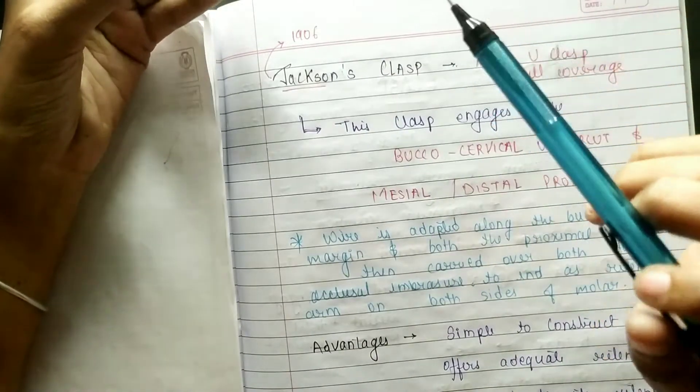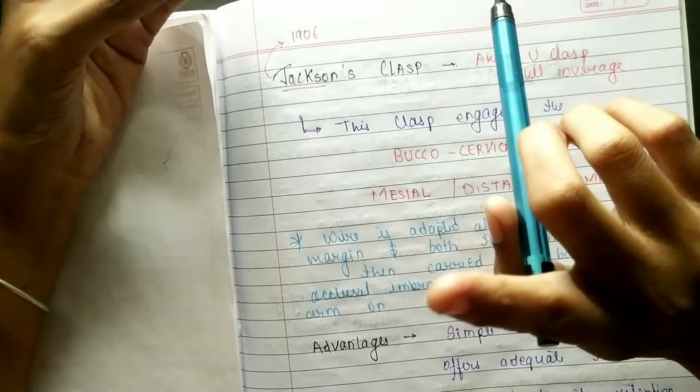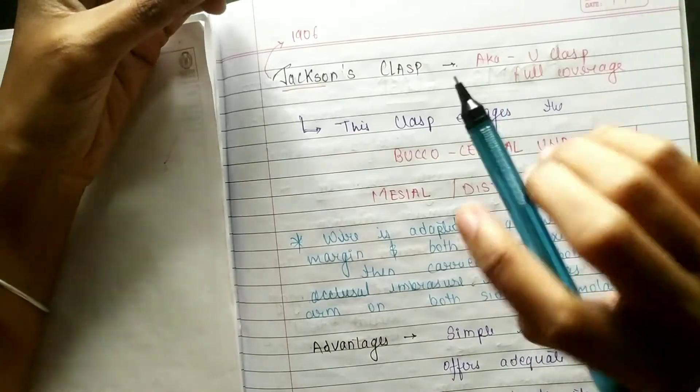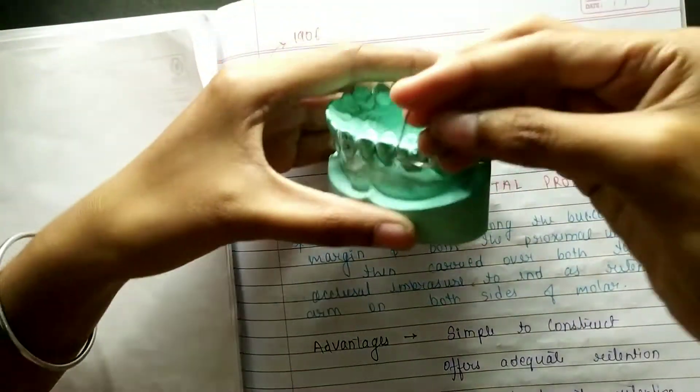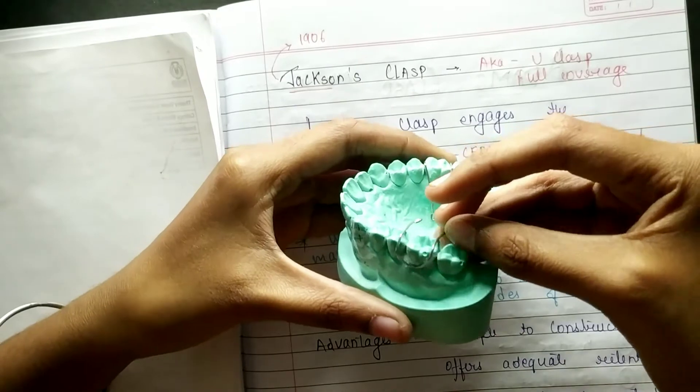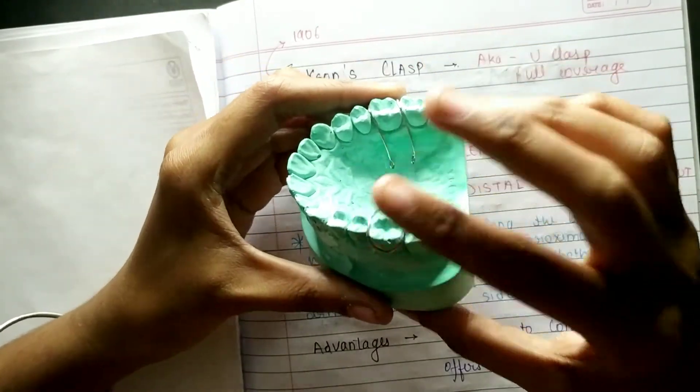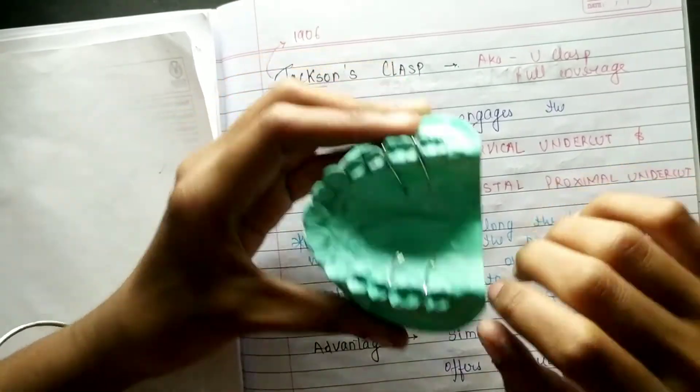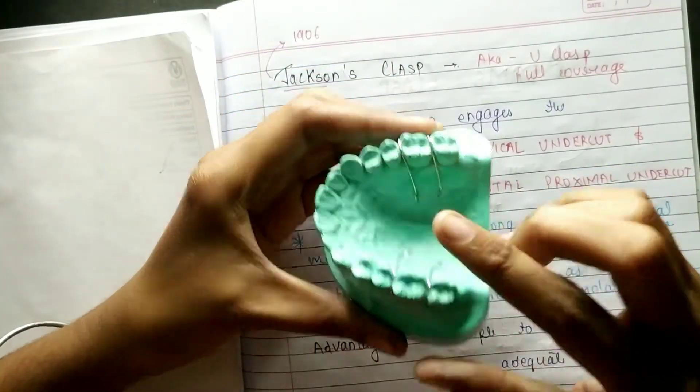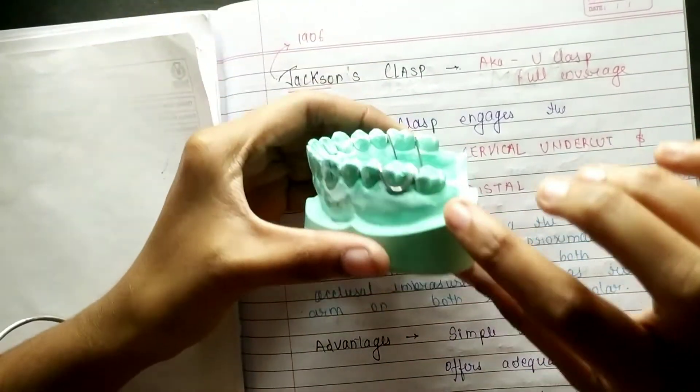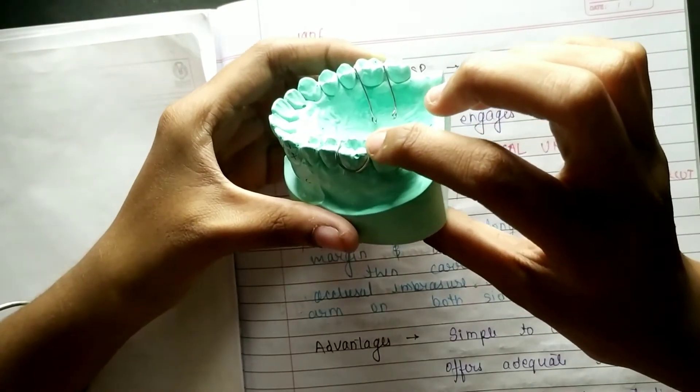This is full coverage, but it is used on a single tooth. This is your U-clasp, this is the full coverage. Now look, cervical region, occlusal region.